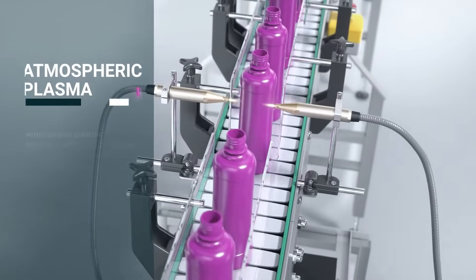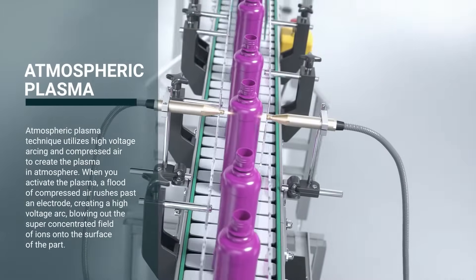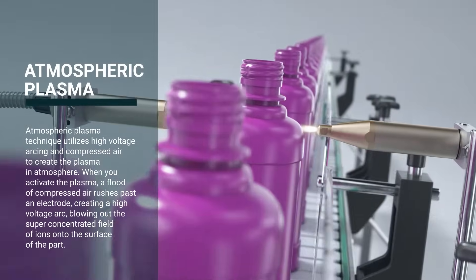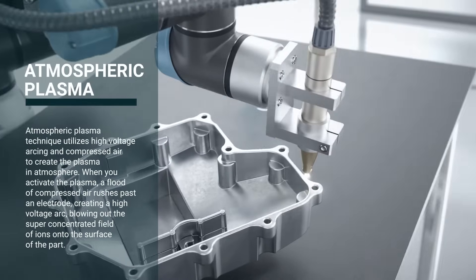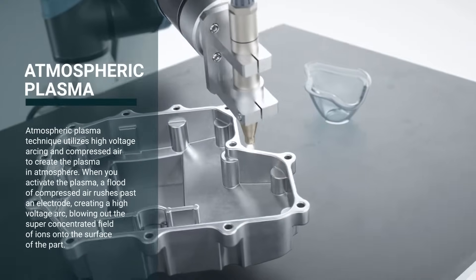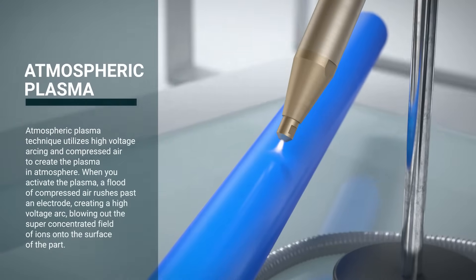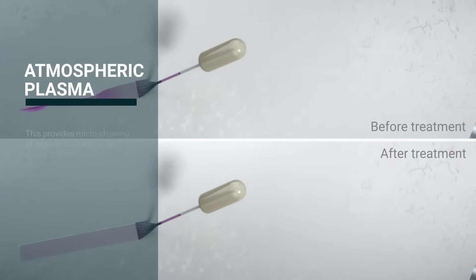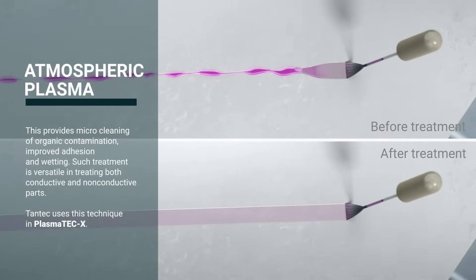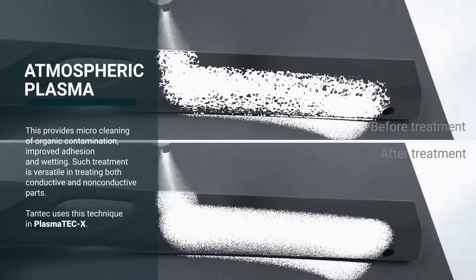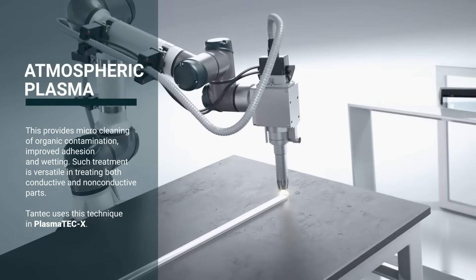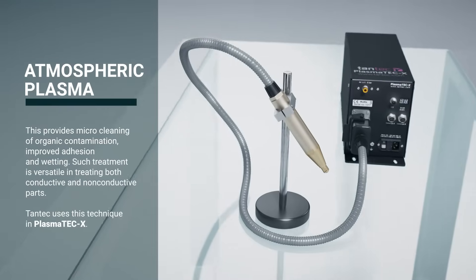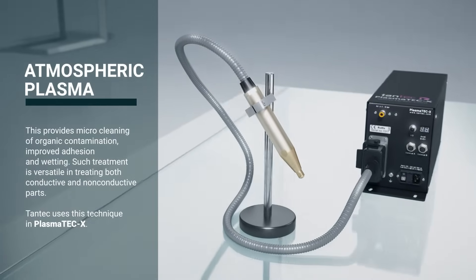Atmospheric plasma technique utilizes high-voltage arcing and compressed air to create the plasma in atmosphere. When you activate the plasma, a flood of compressed air rushes past an electrode, creating a high-voltage arc, blowing out the super-concentrated field of ions onto the surface of the part. This provides micro-cleaning of organic contamination, improved adhesion, and wetting.